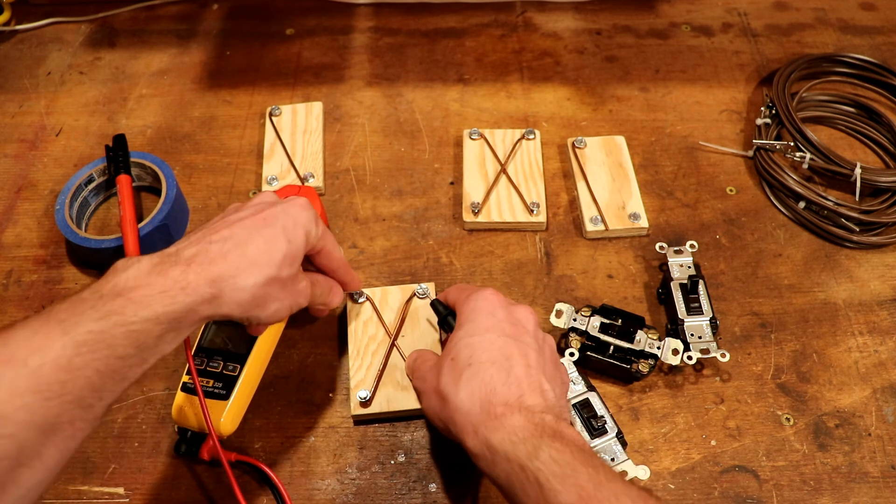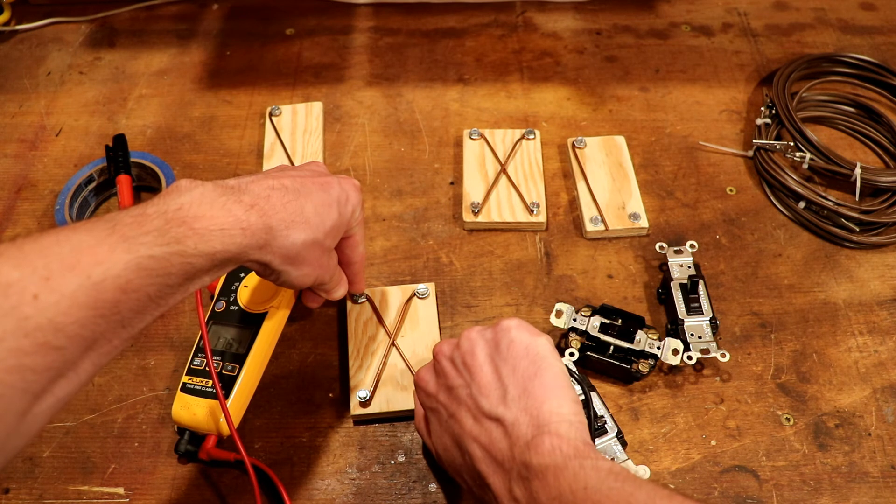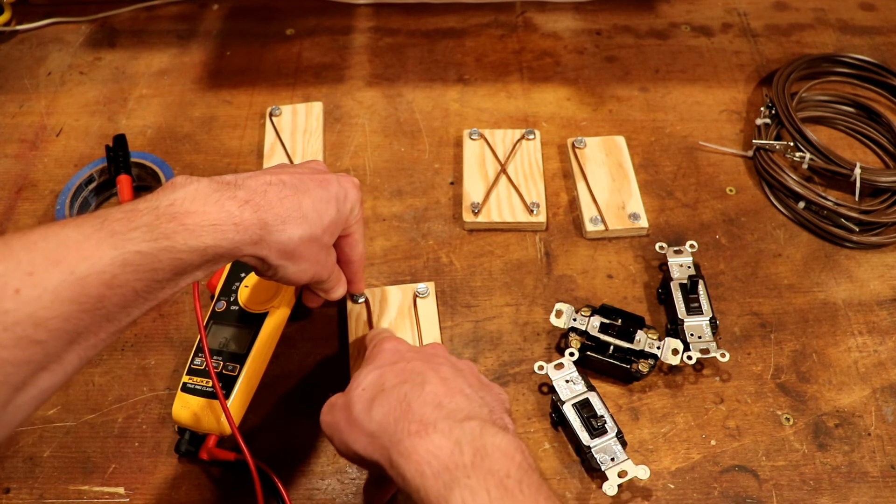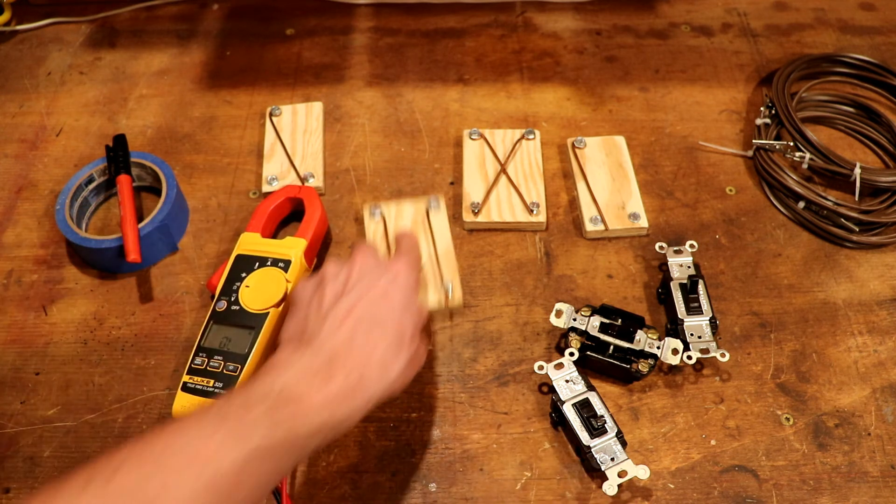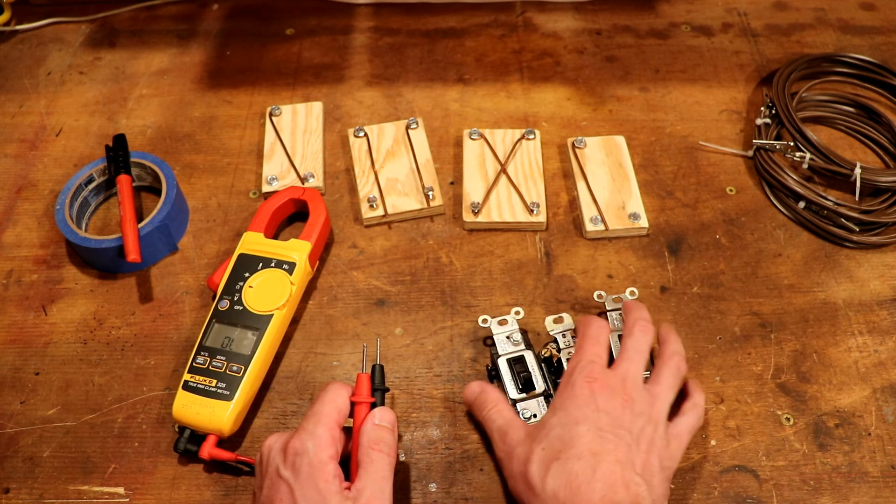We could even try it here with the switch flipped one way. We should have continuity there, but not there. And then we flip the switch the other way and the continuity changes. So you can go through and test your individual switches, make sure they work right. They can wear out sometimes.